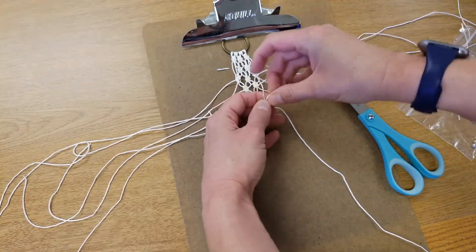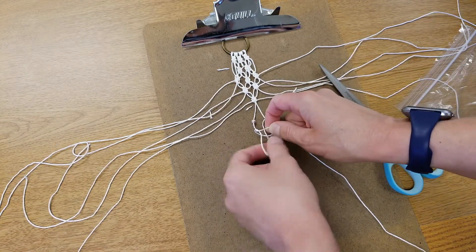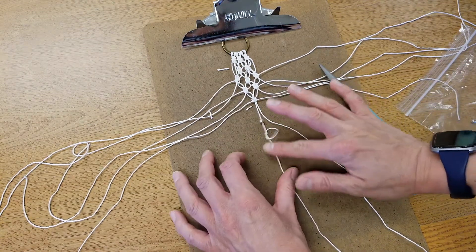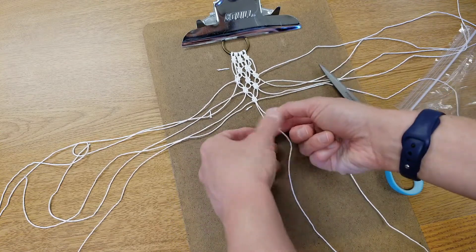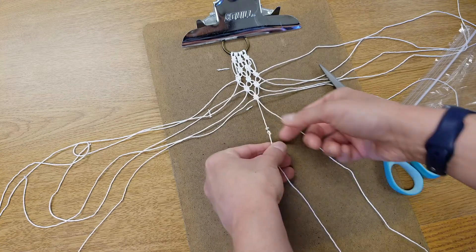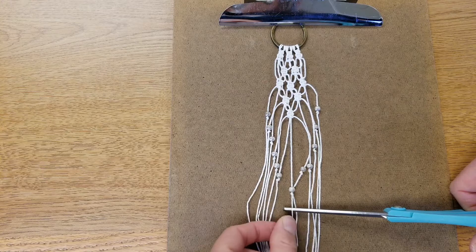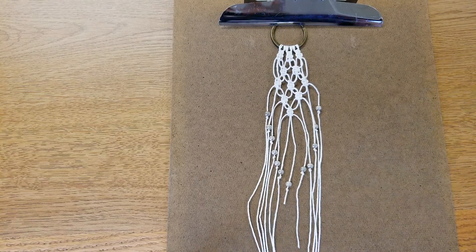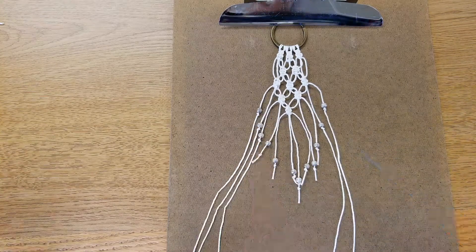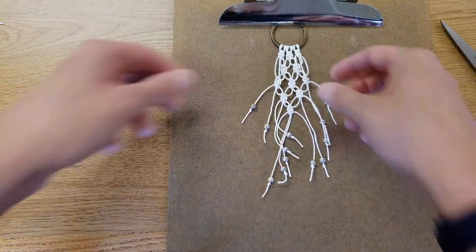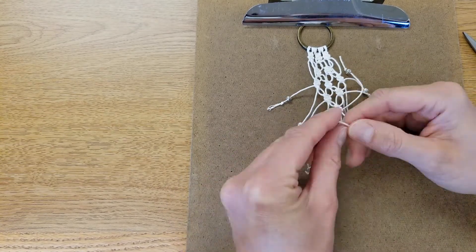I knotted mine pretty loosely because I wanted to play around with the positioning of the beads along the fringe, so my recommendation is do a little bit of a knot to begin with and then when you have everything where you want it you can tighten those knots up. Once all the beads are where you want them and you've tightened the knots, you can begin trimming the excess cord. I left a little bit of length after each knot and then I frayed the ends a bit to give them some texture.